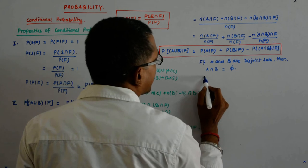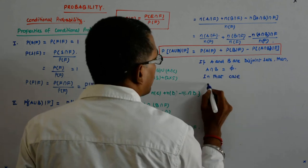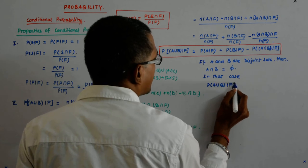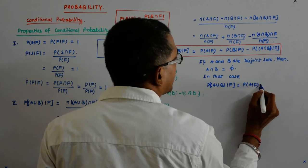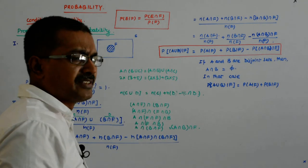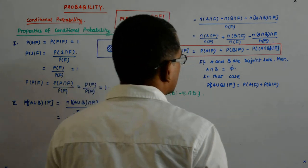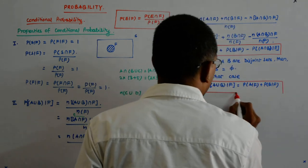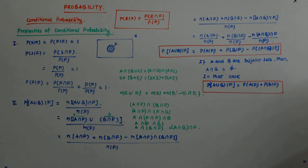So in that case, P(A union B) becomes P(A) plus P(B), because the probability of this happening is zero — there are no elements in that set, zero elements. So my probability becomes this, if it is disjoint.